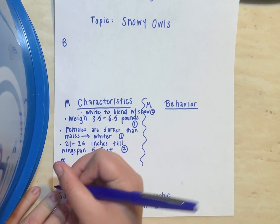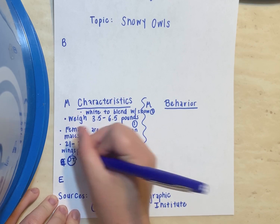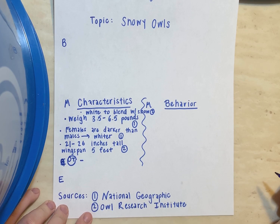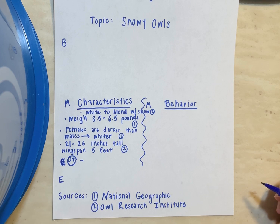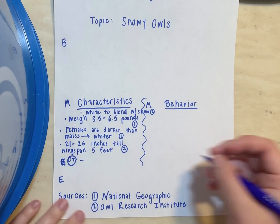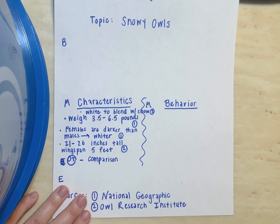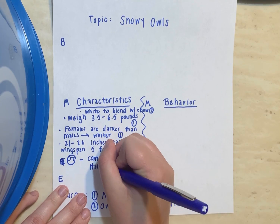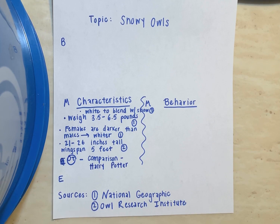I'm running out of room, so I need to include my original thought. Remember, an original thought can be a comparison, an imagine, or an anecdote — which is a personal story. I don't really have a personal story with a snowy owl. However, many of you have probably seen Harry Potter, and Harry Potter has a pet snowy owl. So I'm going to use a comparison to Harry Potter. I'm only reminding myself of what I'm going to write about — these are just bullet points.